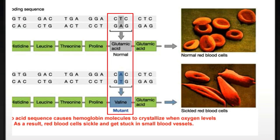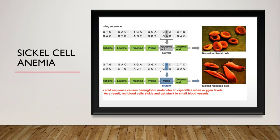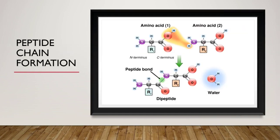اس change کی وجہ سے red blood cells جو کہ normally round ہوتے ہیں، ان کی shape change ہو جاتی ہے, and they get stuck in small blood vessels. تو ہم نے دیکھا کہ کس طرح amino acids کا sequence change ہونے کی وجہ سے ایک blood disease ہو رہی ہے. Proteins are the long peptide chains.